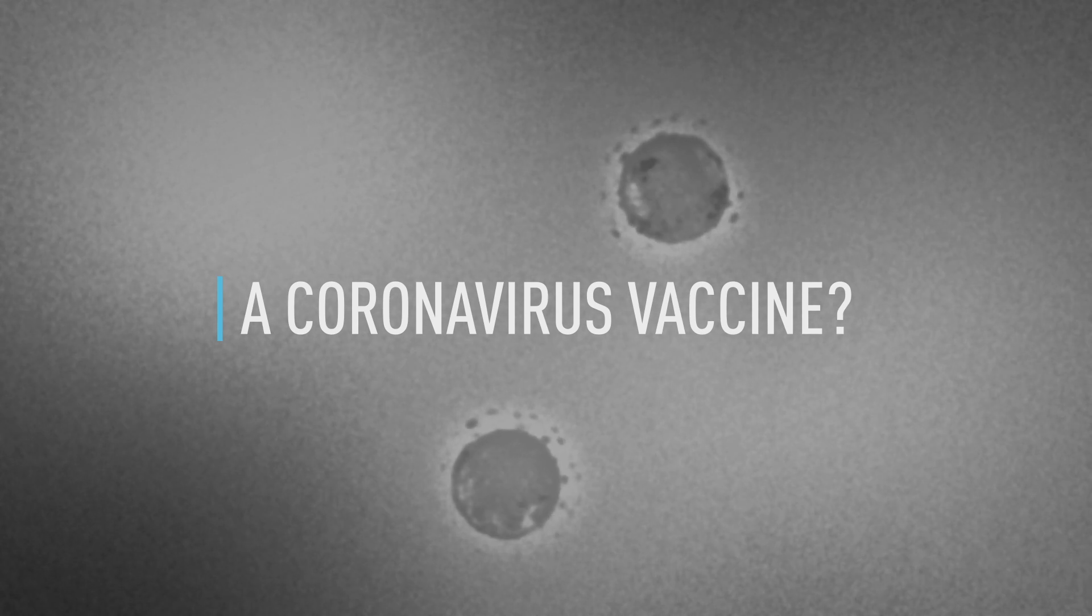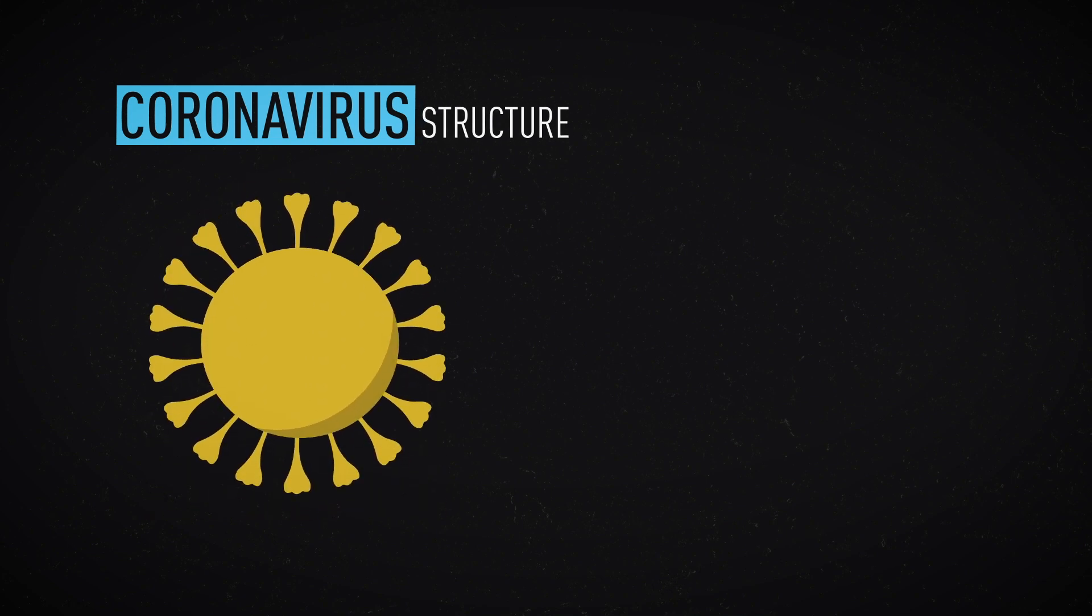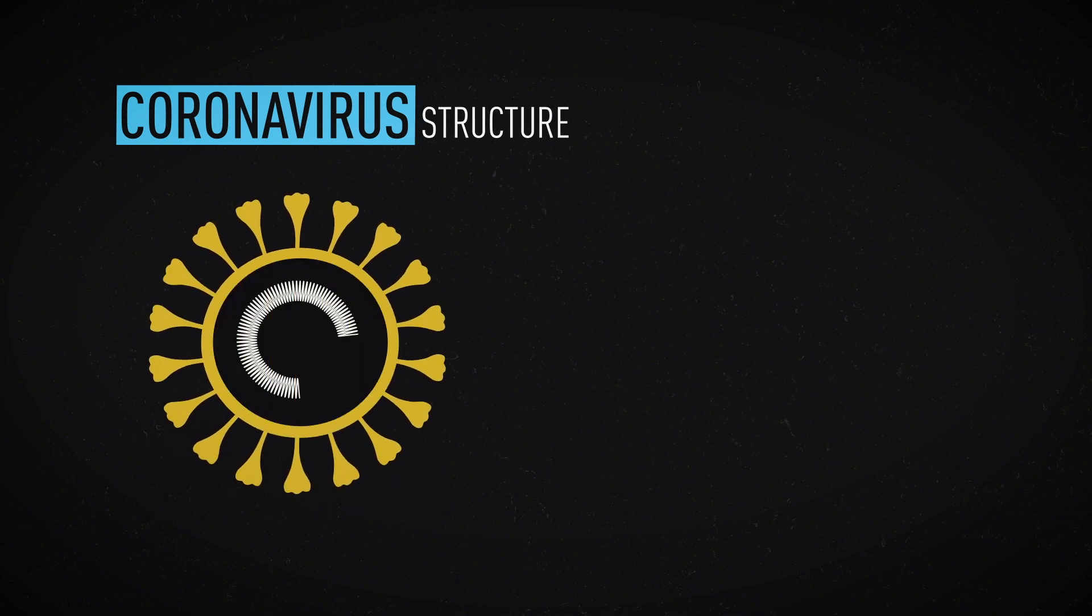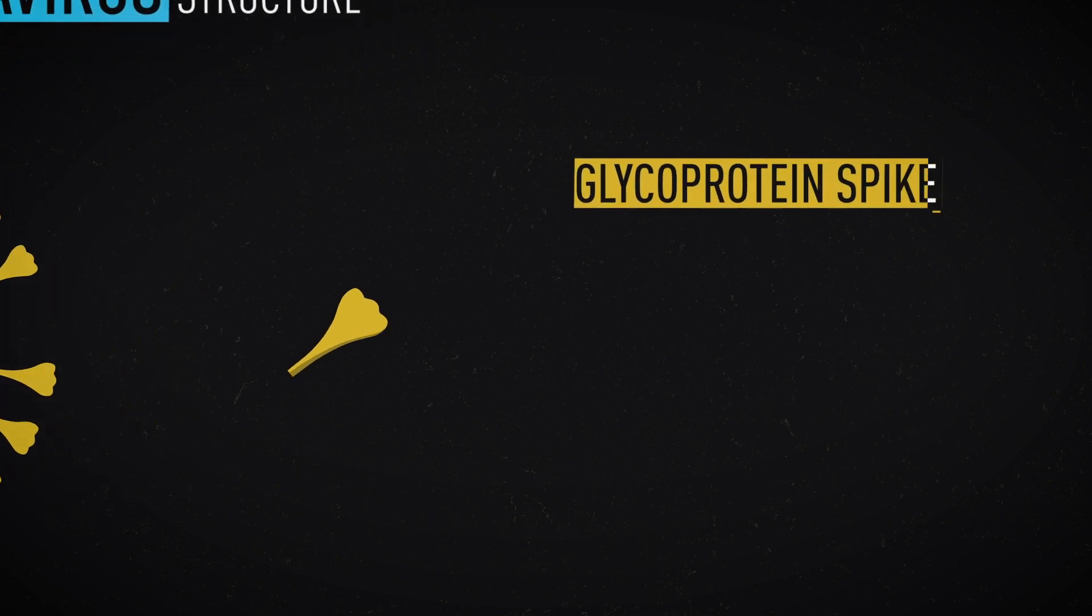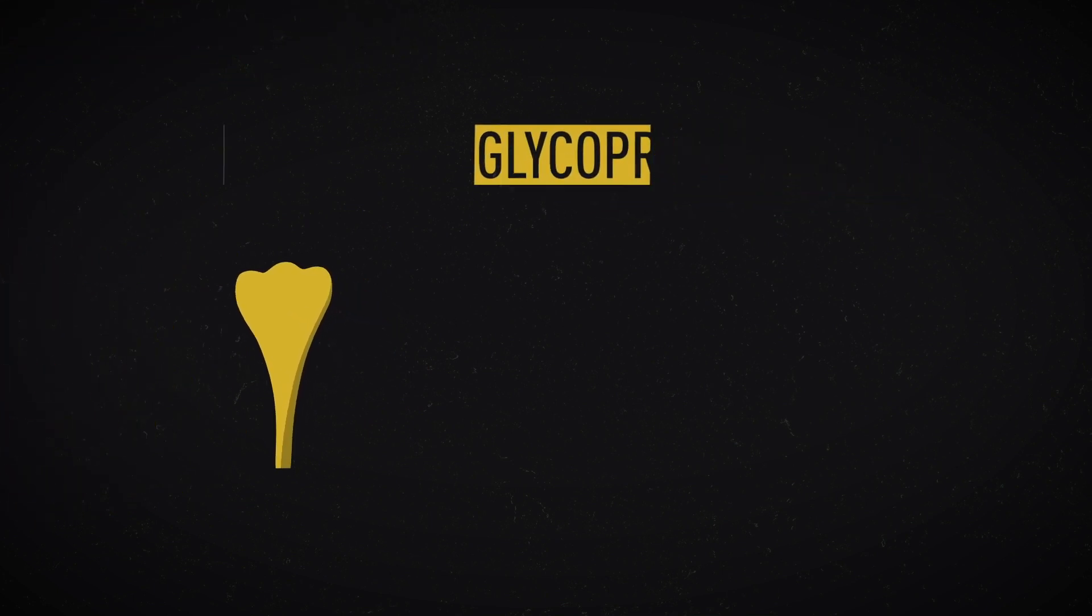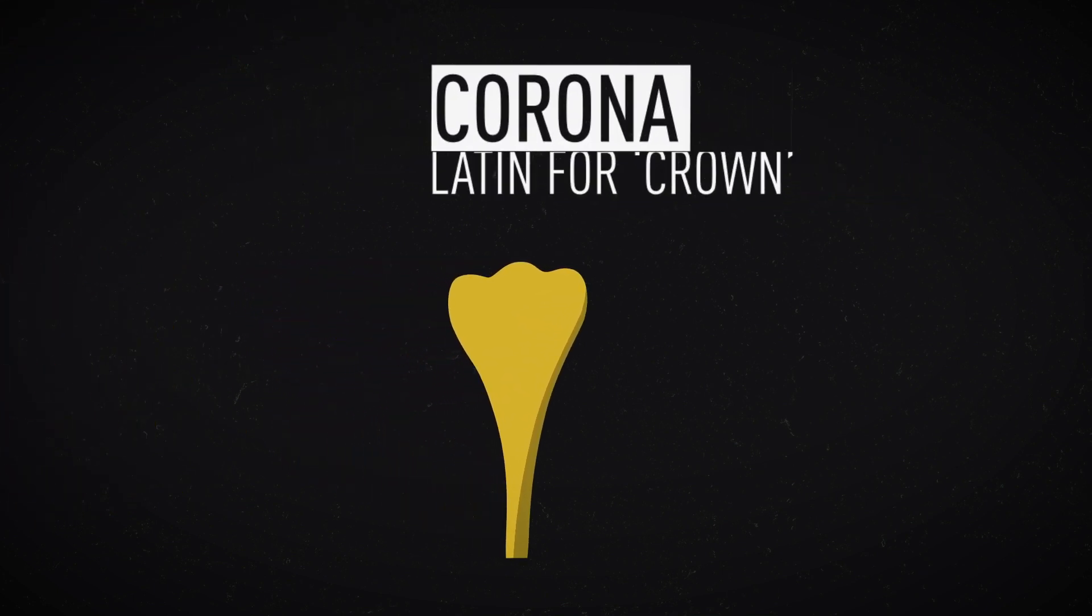So can we use the same principles to generate a coronavirus vaccine? Possibly. The coronavirus family is separate from influenza, but shares common traits. On the outside is a glycoprotein spike. This crown-like structure is where the virus gets its name.